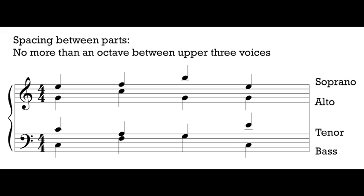There are lots of ways we can distribute the pitches of a chord between our four parts. One thing to keep in mind is the spacing between our voices. The primary rule is that we have no more than an octave between our upper three voices — that means between our tenor and alto, and between our alto and soprano. Looking at the first chord here, between our tenor and alto, C to G is a perfect fifth — that's less than an octave, good. Between our alto and soprano, G to E is a sixth — also less than an octave. This is a well-spaced chord.